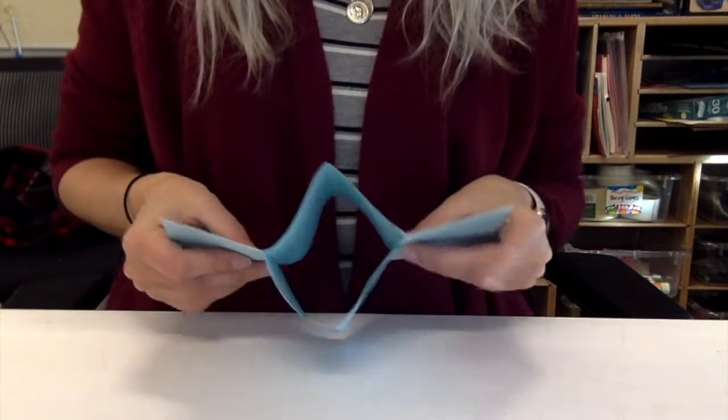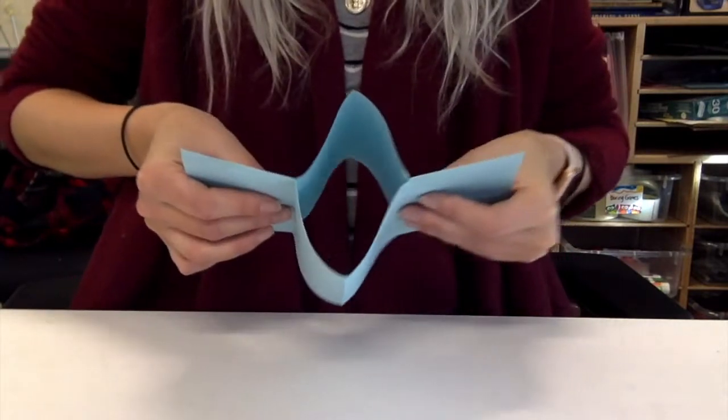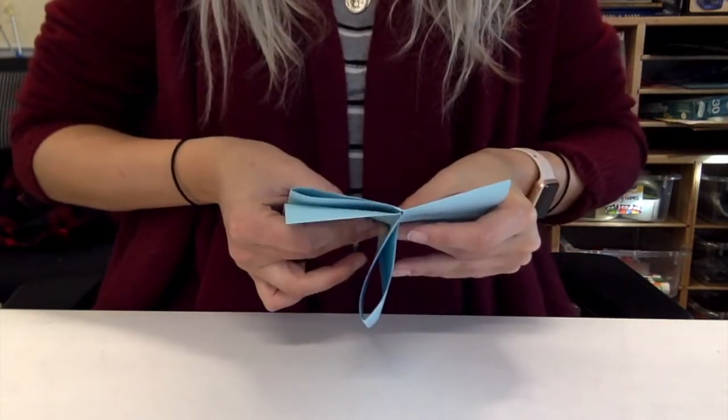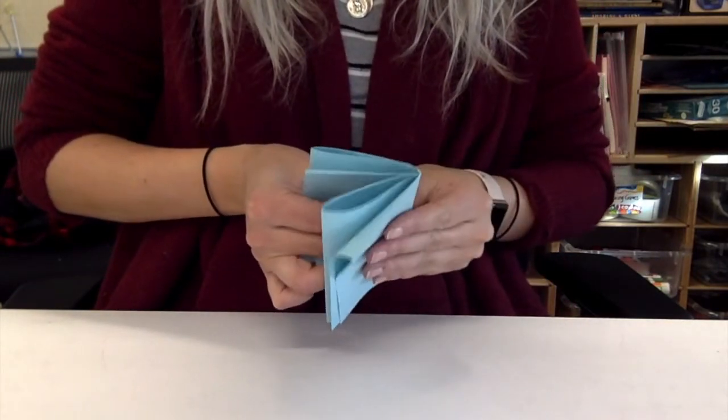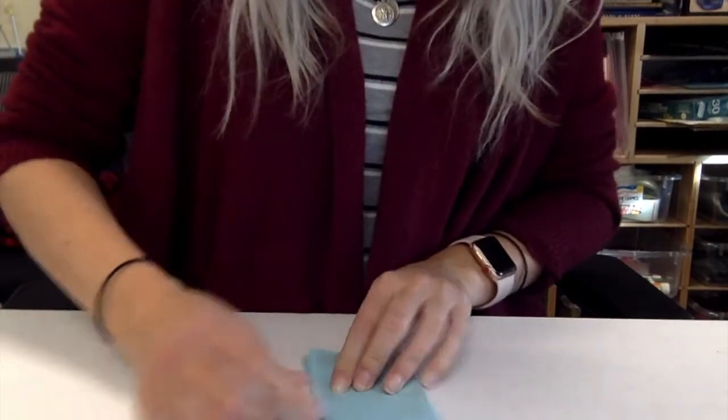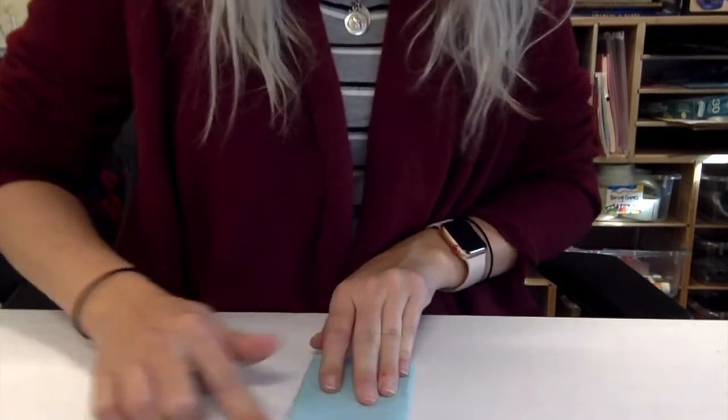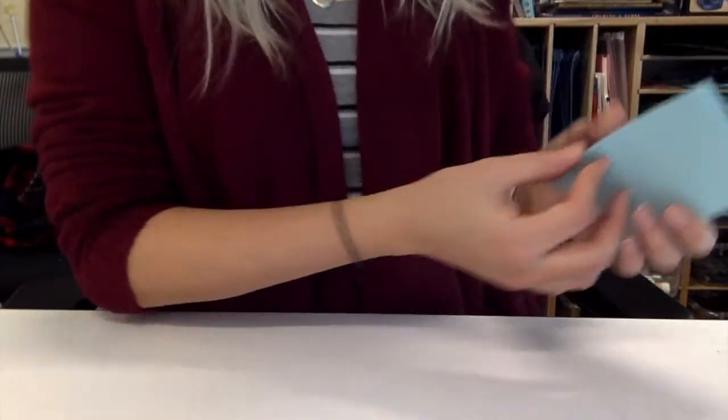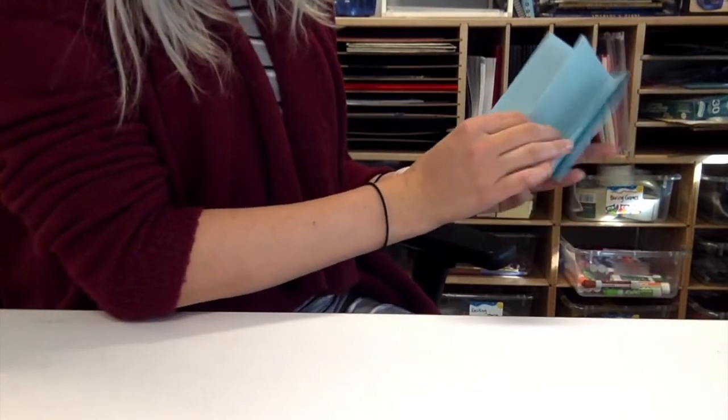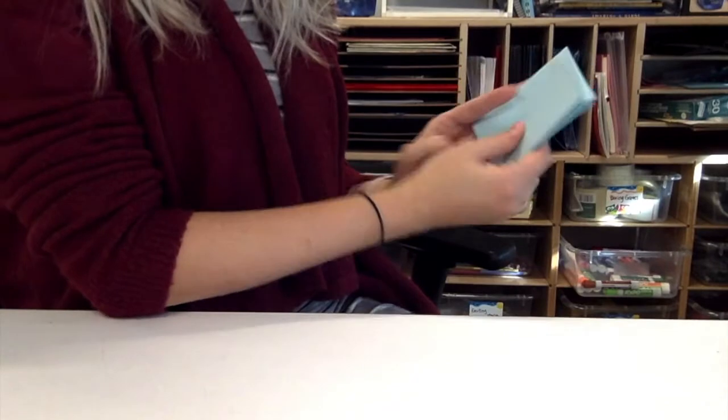Once you have your diamond, keep pushing. Then you're going to take all of the different flaps and fold them down again, creasing your edges one last time. There you have your book with one, two, three, four pages. Hopefully that helps, thanks for watching!